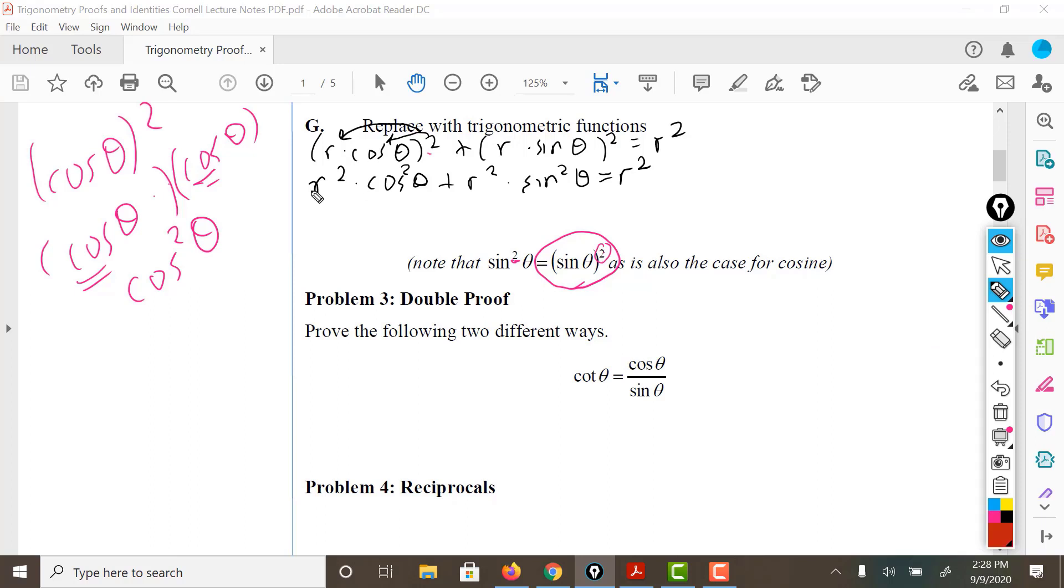We're going to go ahead and divide all of these guys by R squared. And what happens is this is gone, and this is gone. And R squared over R squared is equal to 1. So this whole thing becomes cosine squared plus sine squared is equal to 1. And traditionally, the way we write this is we would write it as sine squared theta plus cosine squared theta is equal to 1.